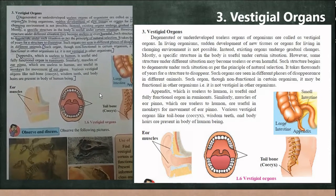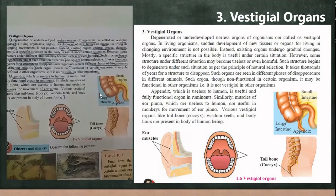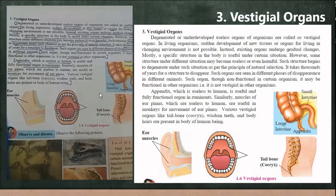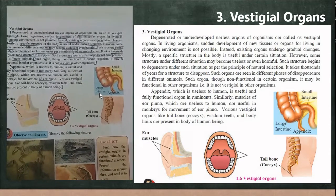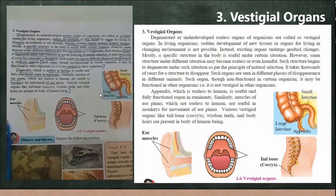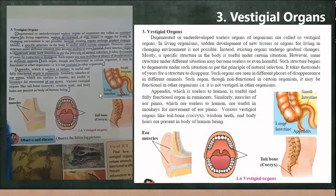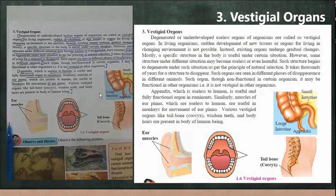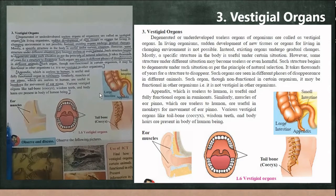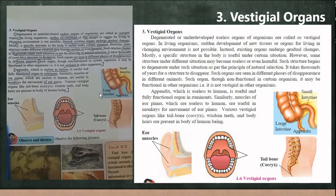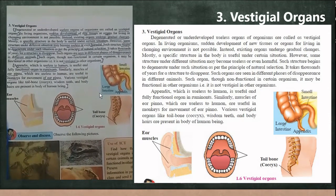The appendix was very useful for our ancestors, who used to eat raw food that was easily digested with its help. But now, as we consume cooked food, the appendix is useless to a human being, while it is fully functional in ruminants. Similarly, the muscles of the ear pinna are not used by human beings but are useful for monkeys for movement of their ear. Other examples include the tailbone, wisdom teeth, and body hair — all of which are reduced compared to our ancestors.